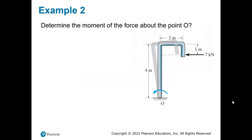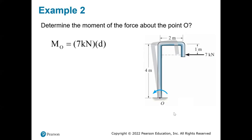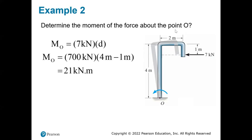Example two: find the moment of the force about O. Point O is here and the force is here. The tricky part is finding the perpendicular distance. First, draw the line of action; then draw a perpendicular from O to that line. That perpendicular distance is four meters — but the total distance shown is seven, and we only use four. So four minus one equals three meters, giving the final moment.